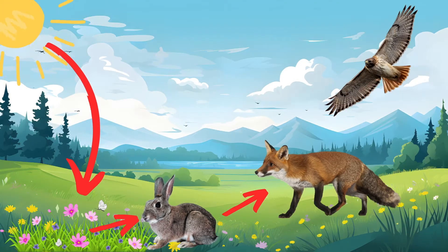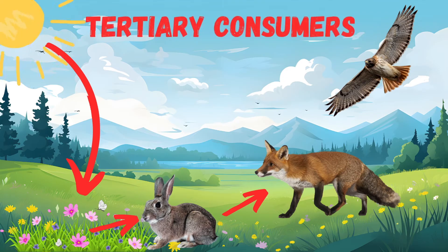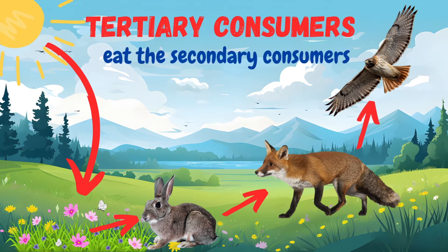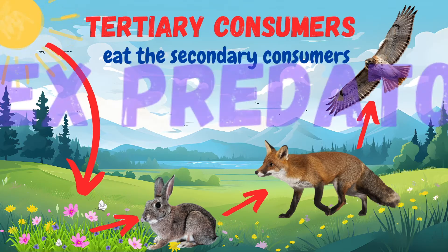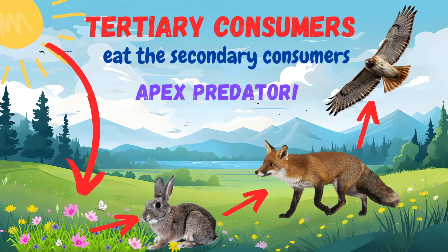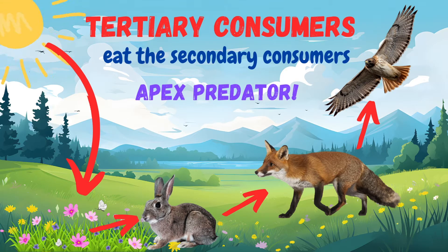At the top of the food chain are the tertiary consumers. These are the predators that eat the secondary consumers. They're often referred to as apex predators because they have few or no natural predators. Tertiary consumers usually rely on smaller carnivores or omnivores for energy.